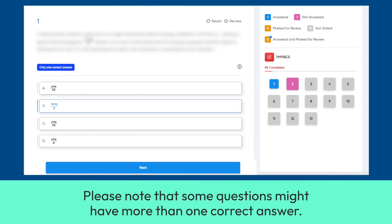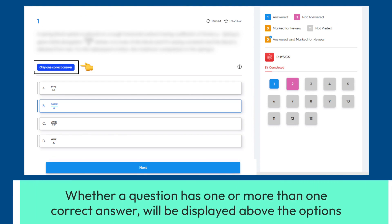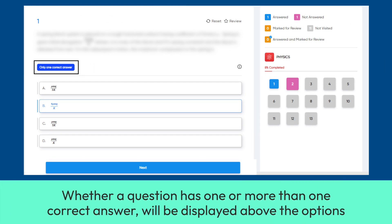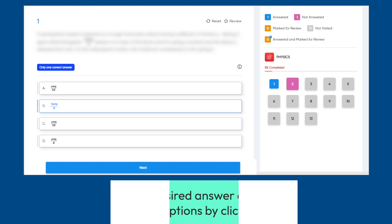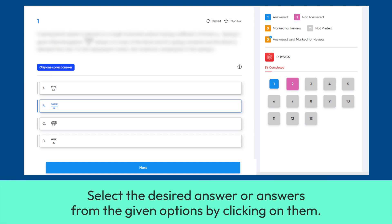Please note that some questions might have more than one correct answer. Whether a question has one or more than one correct answer will be displayed above the options. Select the desired answer or answers from the given options by clicking on them.